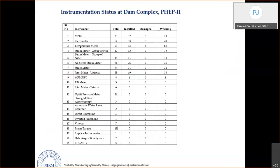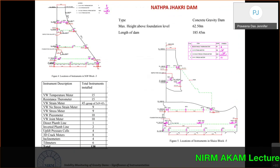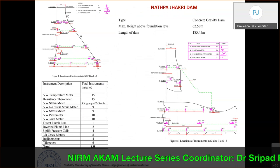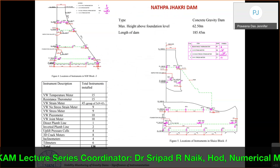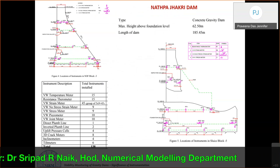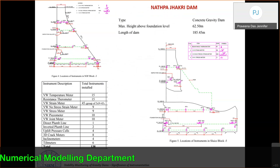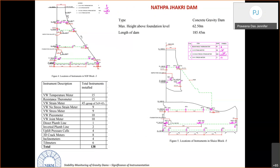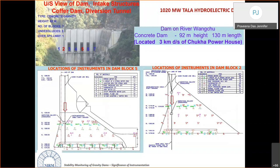Around 300 instruments are planned in total; approximately 80% are already installed. Remaining instruments include direct and inverted plumb lines, inclinometers, and SMAs. A comparison with Narpa Jacri Dam instrumentation shows the level of detail taken, with redundancy built in so that no block is left without data even if some instruments fail.